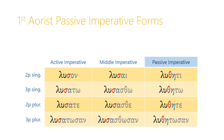Adding the first aorist passive imperative forms, we find the same theta tense marker and eta connecting vowel seen in the aorist passive indicative. The second person singular ending is again irregular: luthēti. After that, the forms become quite regular — the third person singular adds -tō, the second person plural adds -te, and the third person plural adds -tōsan. So: luthēti, luthētō, luthēte, luthētōsan.